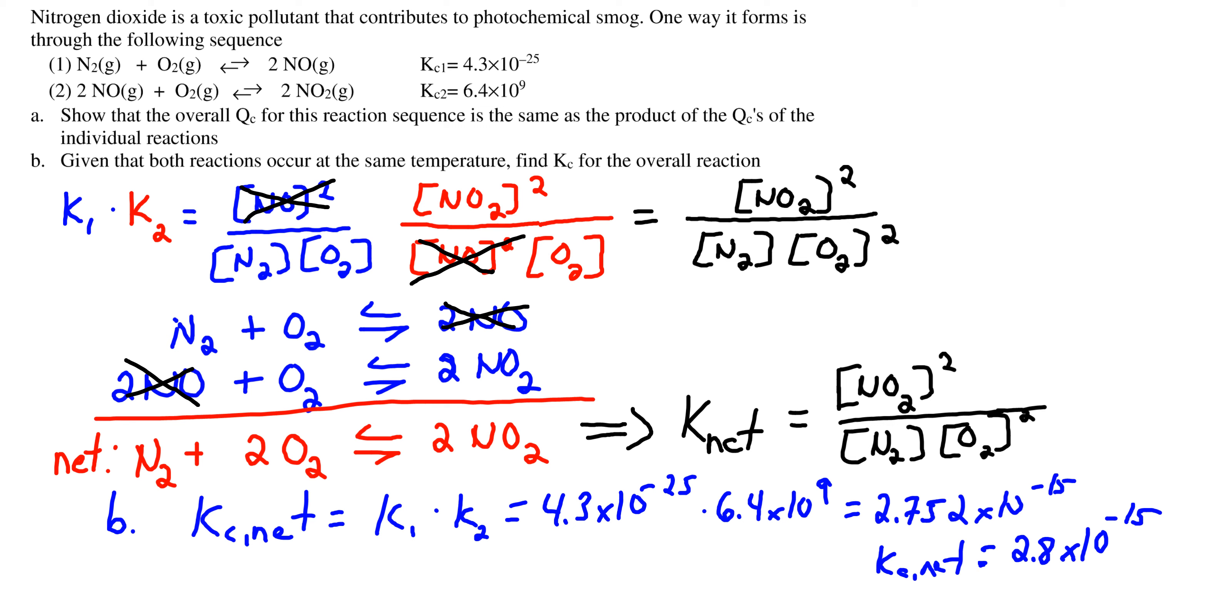And we can finish off by doing question B, determining the numerical value of Kc net by multiplying the two Kc values, and we get our final answer.